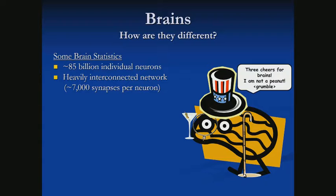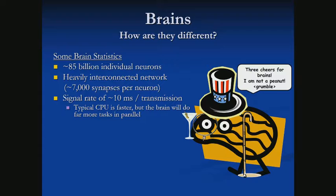That's 7,000 connections to other things — most typically other neurons. The axon from one neuron is connected to the dendrites of another via a synapse to control that flow. The signal rate of our brains is around 10 milliseconds transmission speed, which is slower than a typical CPU, but our brains operate in parallel, so we overcome that lower speed.